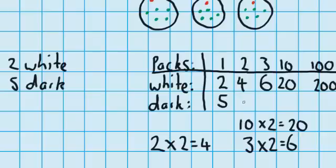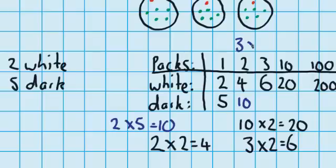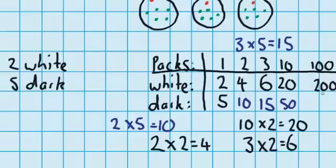Now let's work out the dark chocolate line in a different colour so we don't get confused. In each pack there are five dark pieces of chocolate, so two packs gives two groups of five, which means ten dark pieces. In three packs — three packs of five equals fifteen. For ten packs, ten packs with five dark pieces each means fifty. And one hundred packs with five in each means five hundred dark pieces of chocolate.